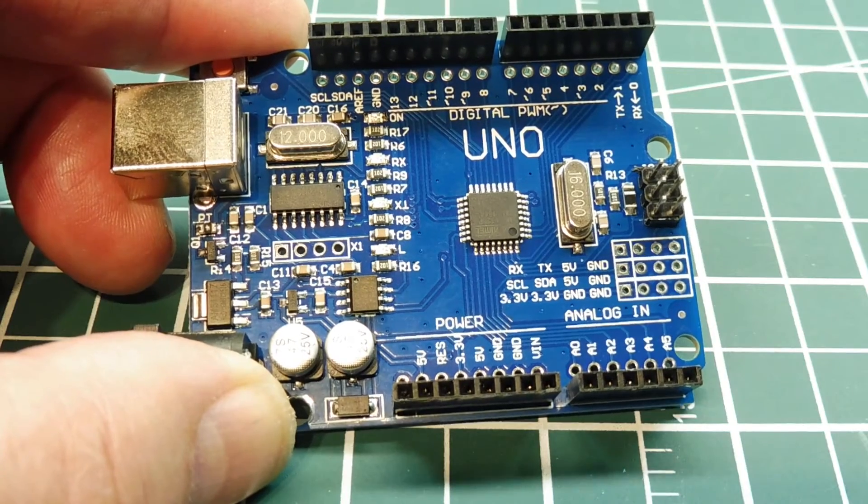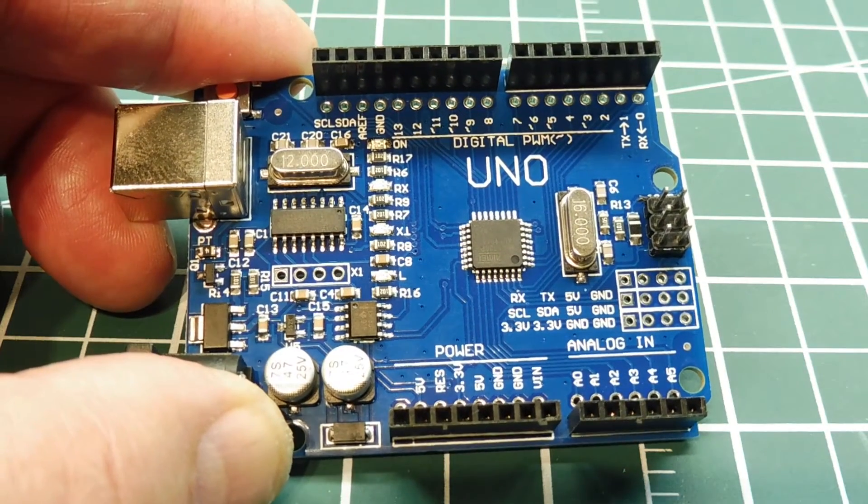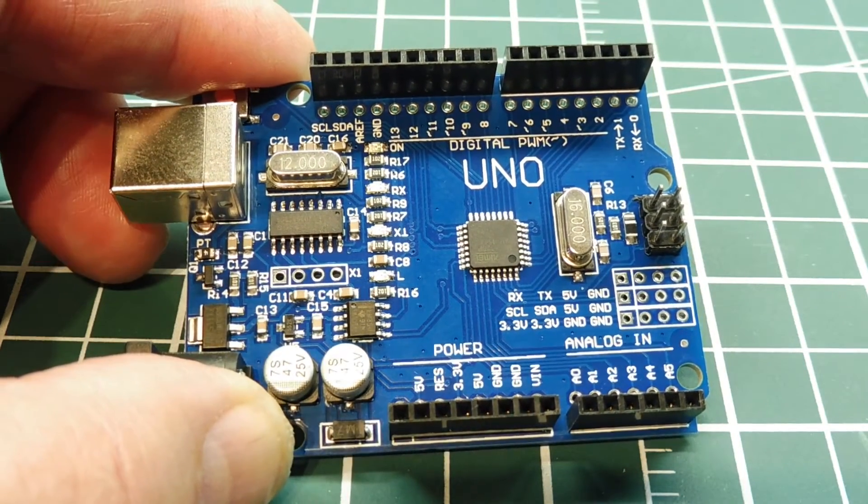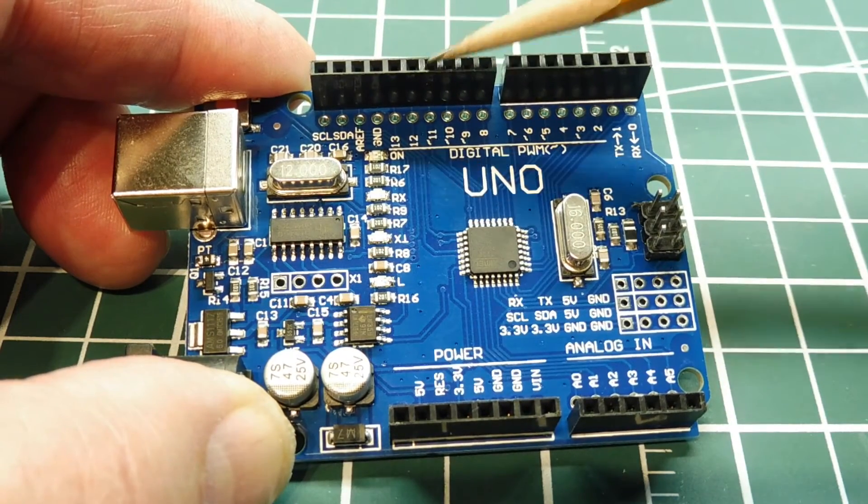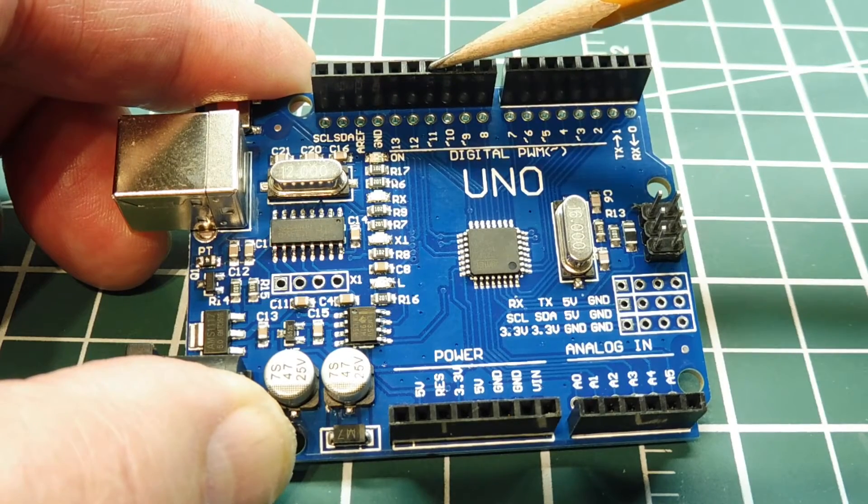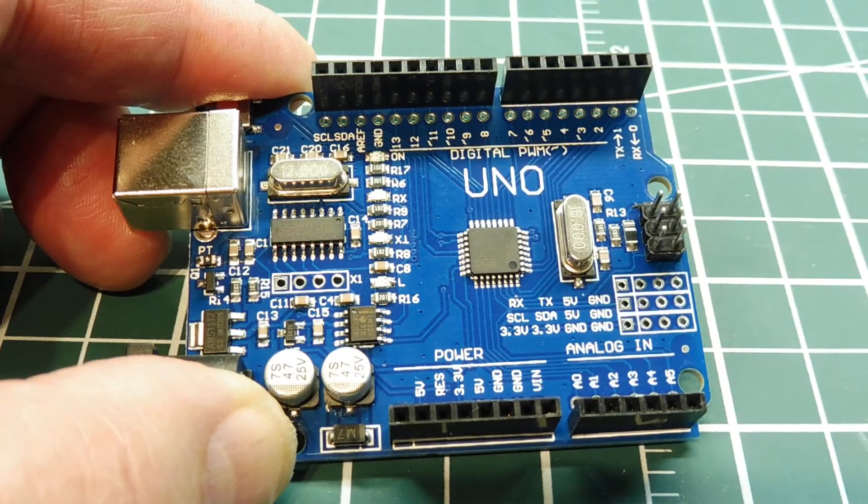The microcontroller on the UNO is an Atmega328P, which is a 5 volt device. If you configure one of the GPIO pins as an input, it wants to see a voltage of 0 to 5 volts max, and if you go higher than 5 volts, you could damage the device.